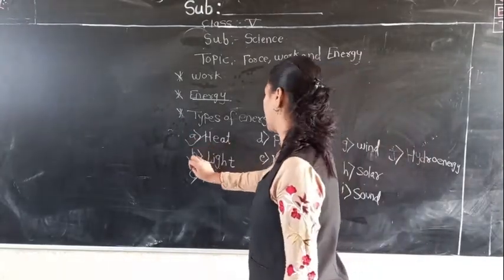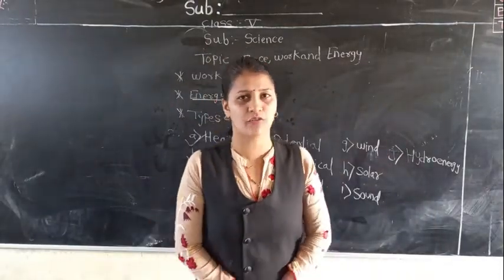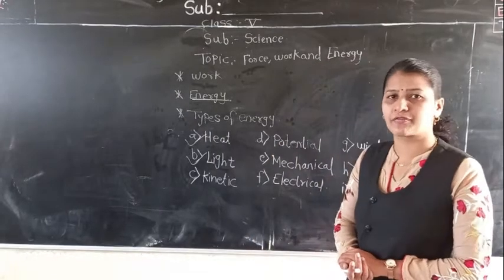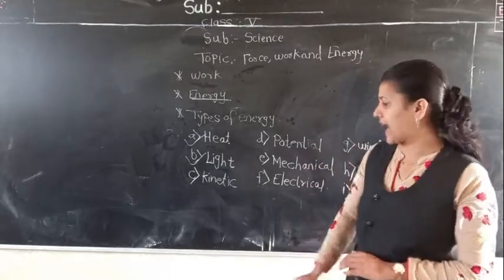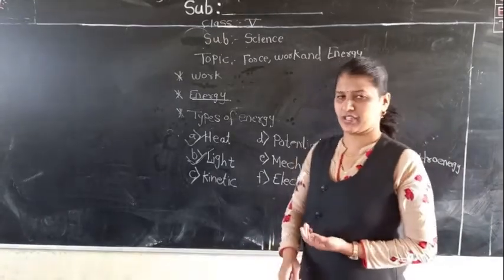The next type of energy is light energy. Where do we get light? Which is the natural source of light? Yes — the sun. The sun is the natural source of light. There are also some artificial sources of light, such as tube light and bulb. The energy which we get from light is called light energy.